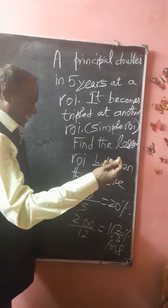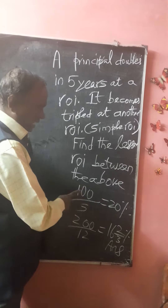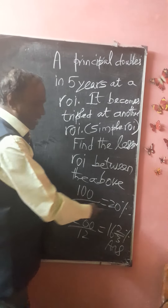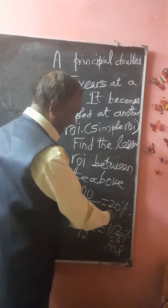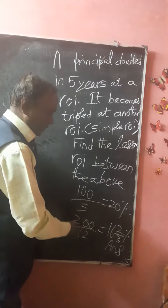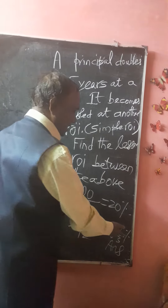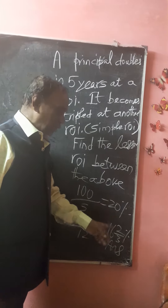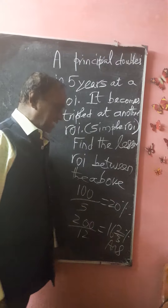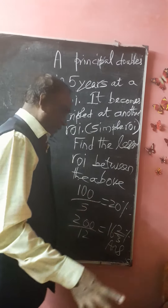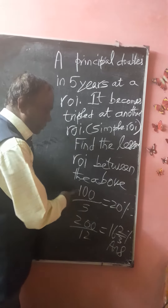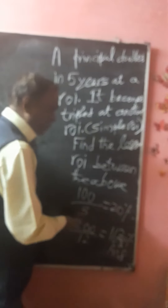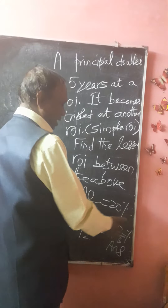You can do it in one second. 100 divided by 5, answer 20%. 200 divided by 12, answer 16 and 2/3%. The lesser between these two is 16 and 2/3%. Doubled means 100 divided by 5; tripled means 200 divided by 12.